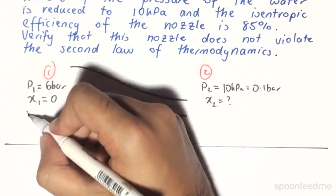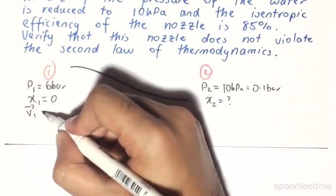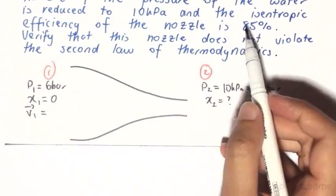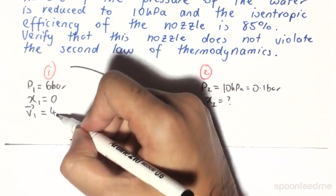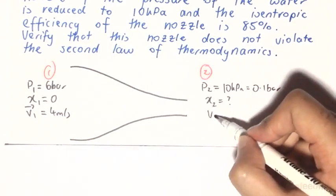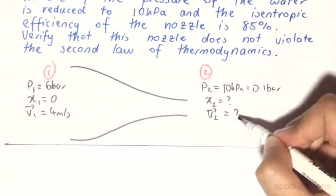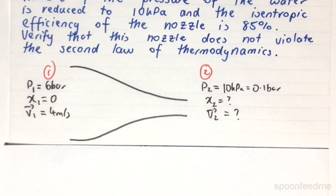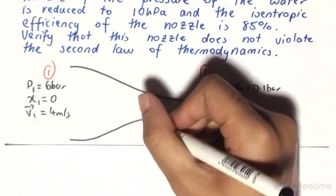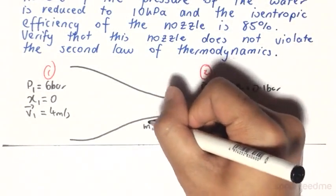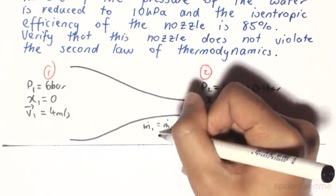And finally, our velocities, we know them to be 4 meters per second in the initial one. And the v2 is unknown. As this one entrance, one exit, our mass flow rates will just be equal to one another.